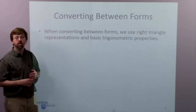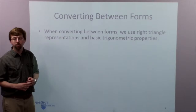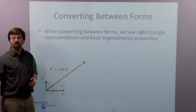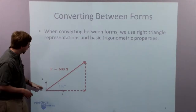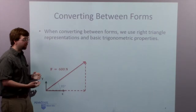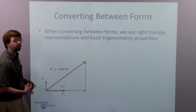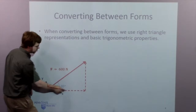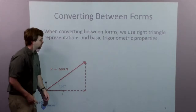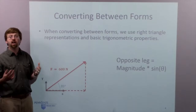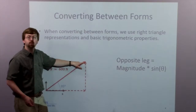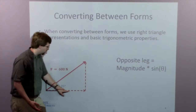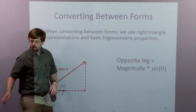When converting between forms, we're going to use right triangles and basic trigonometry to go back and forth between those two forms. In 2D, starting with a magnitude and direction and converting to components, I draw in a right triangle. The hypotenuse is the magnitude of the force vector — 35 degrees up from horizontal. The x-leg is in the direction of the x-axis, and the y-leg is in the direction of the y-axis. With this right triangle, I can use sine and cosine to find the length of the legs, giving me the x and y components of my vector.